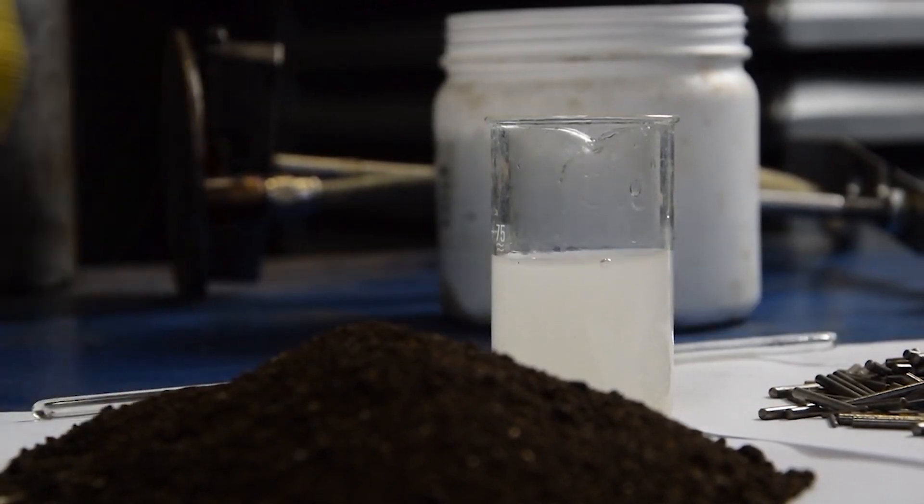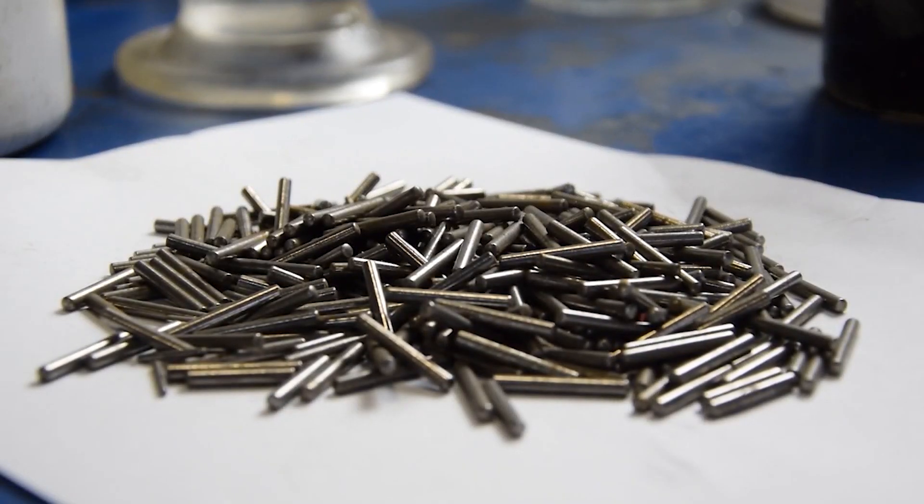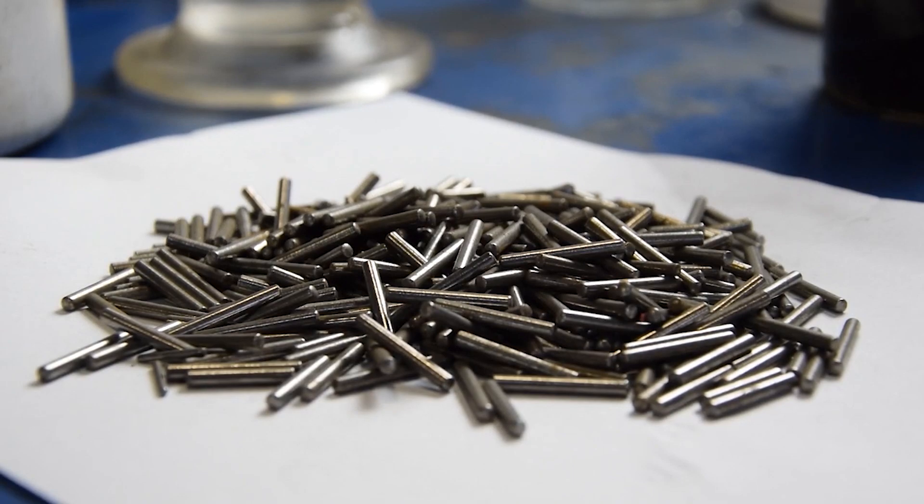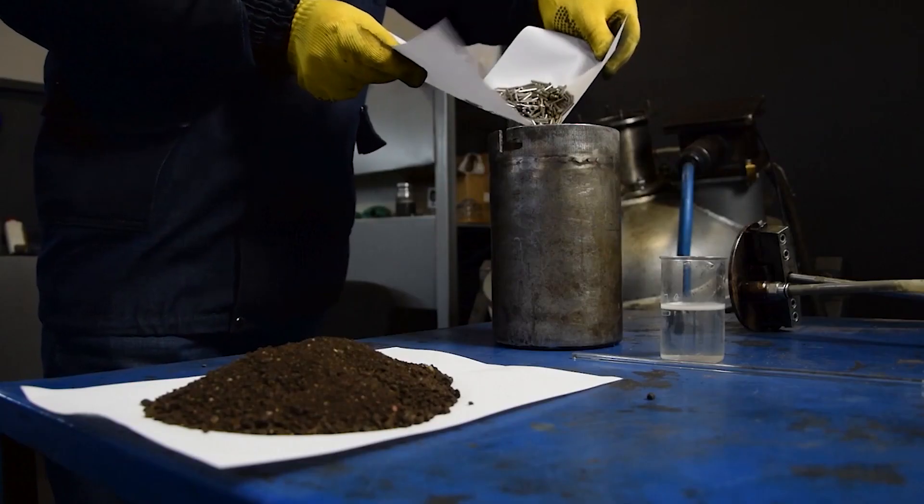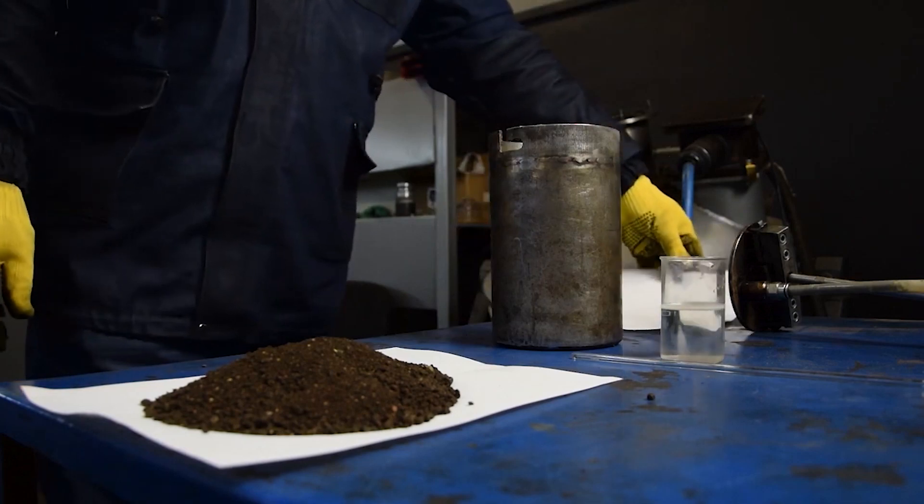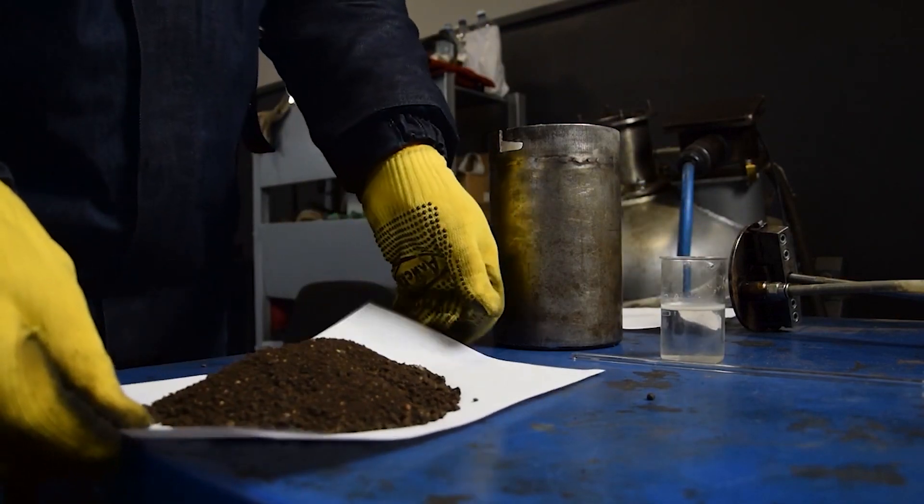The experiment was carried out on the AVS-150 Vortex layer device. The working elements were steel particles with diameter of 1.5 mm and a length of 15 mm. We took 500 grams of particles to run the experiment.